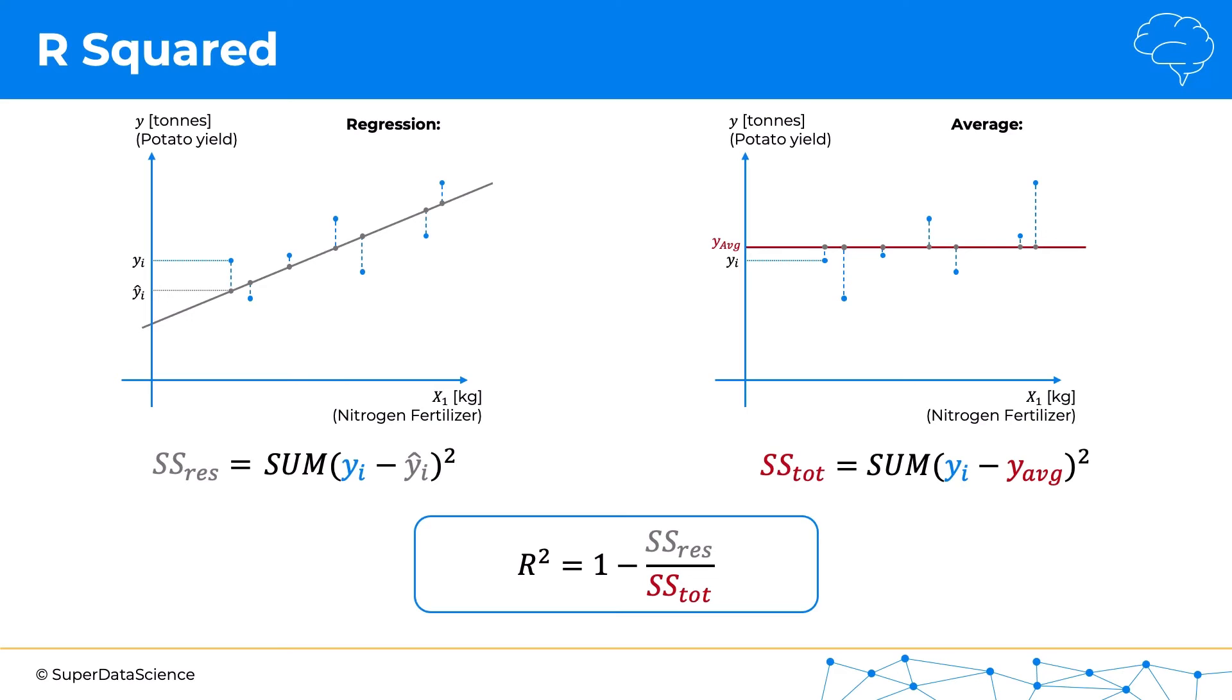So thereby, unless our regression model is facing absolutely the wrong way—for example, a downward slope on the left over here—if our model was sloping downwards, then the residual sum of squares would be huge because our model is just incorrect. But in all other cases, the residual sum of squares is less than the total sum of squares.